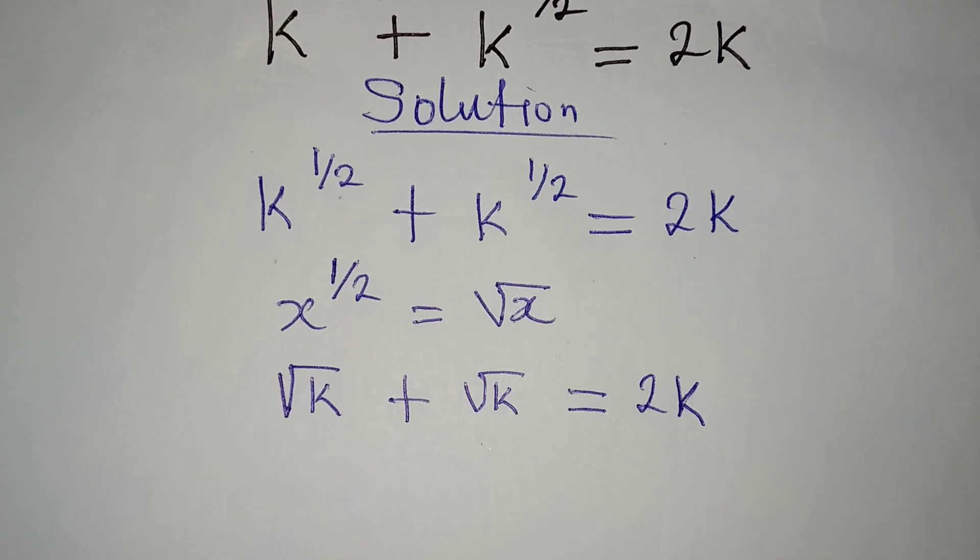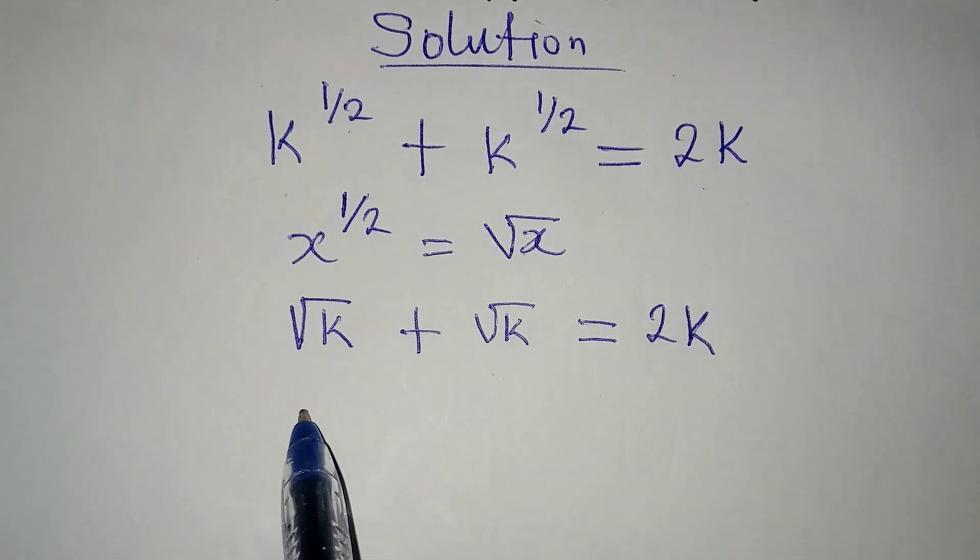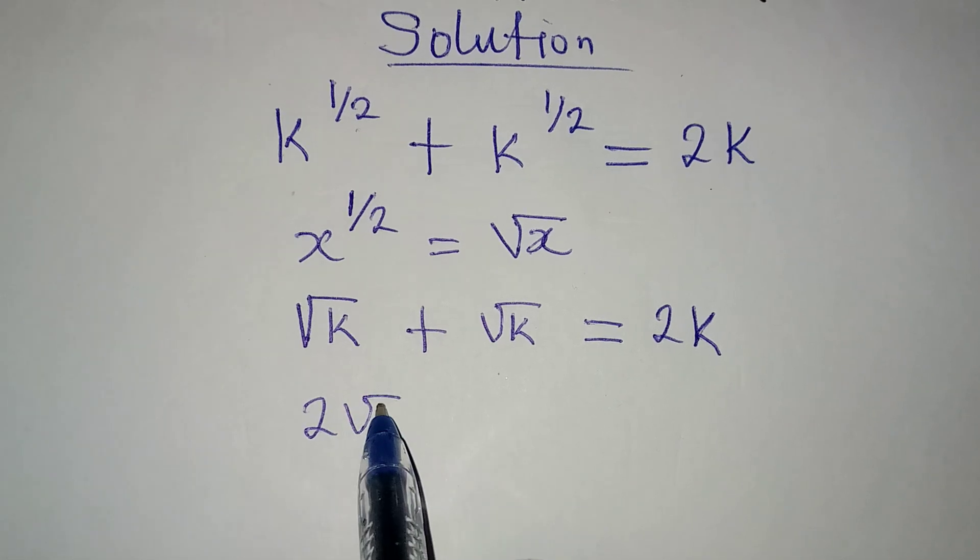So what do I do? Square root of k plus square root of k will give us 2 square root of k.